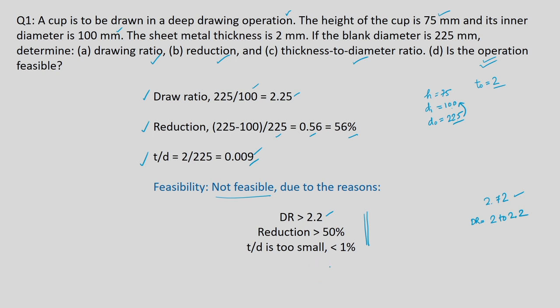The process is again not feasible — not because of design conditions, but because the initial sheet diameter of 175 mm does not provide sufficient material to produce a cup of height 75 mm. The calculated achievable height is only 51.5 mm, which is less than the required 75 mm.